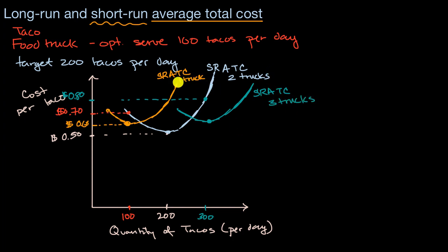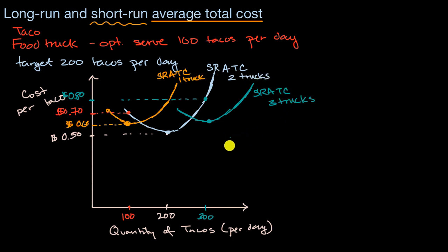The short run is when at least one of your inputs is fixed. In this simplified model, we're assuming that input is the truck, and that everything else is a variable expense.